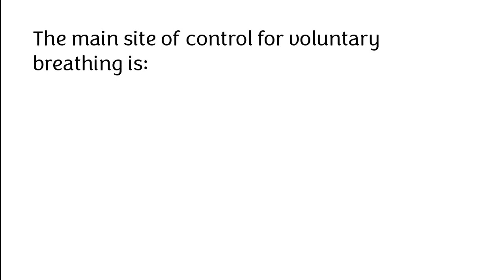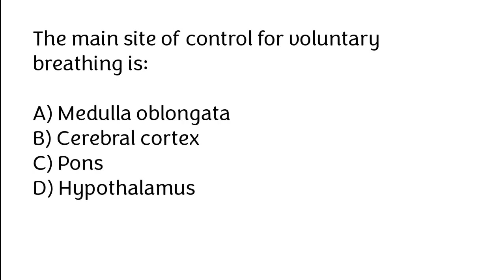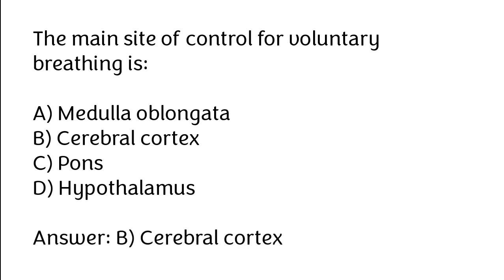The main site of control for voluntary breathing is: (A) medulla oblongata, (B) cerebral cortex, (C) pons, (D) hypothalamus. Correct answer is option B, cerebral cortex.